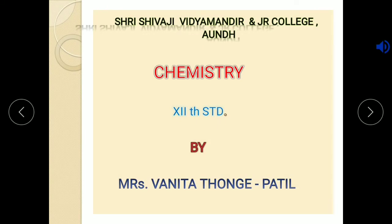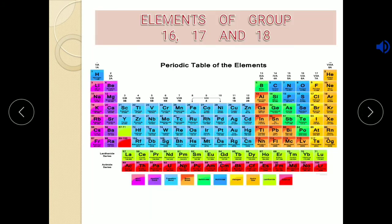Hello friends, welcome to session number six of chemistry. As you all know, we have started with the seventh lesson of your syllabus, that is elements of group 16, 17 and 18. We call them p-block elements. In the last sessions we learned about the general introduction, occurrence, electronic configuration, and physical properties of elements of group 16, 17 and 18, as well as periodic trends of some properties and the anomalous behavior of oxygen and fluorine.